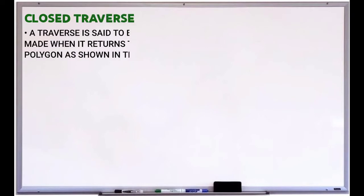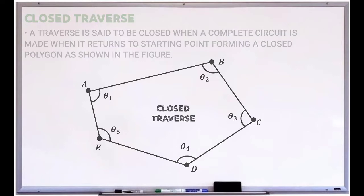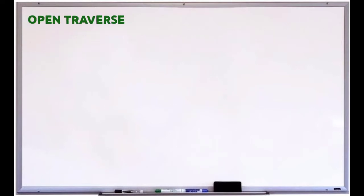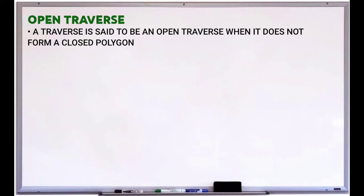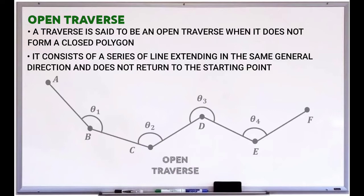A closed traverse is said to be closed when a complete circuit is made — when it returns to the starting point, forming a closed polygon as shown in the figure. An open traverse consists of a series of lines extending in the same general direction and does not return to the starting point. For this topic, we will be focusing on the closed traverse.